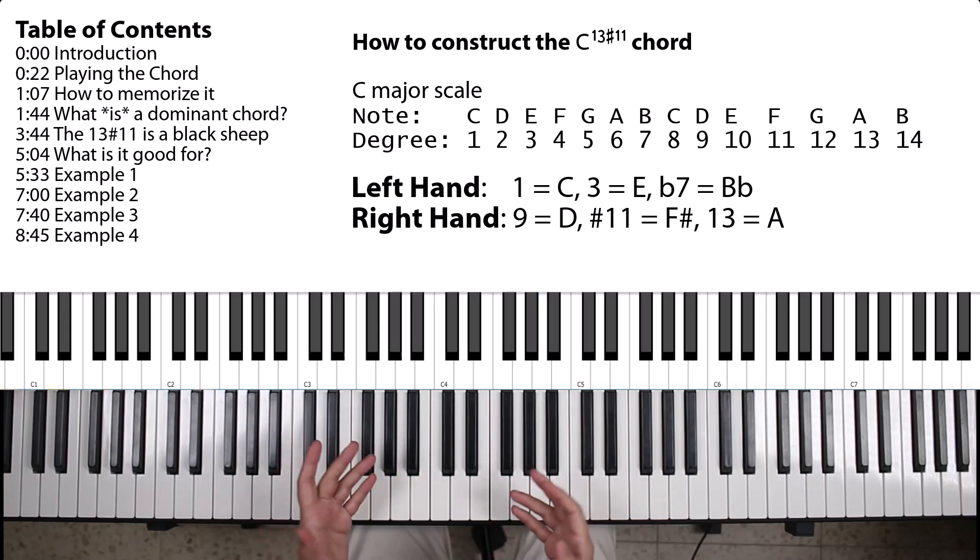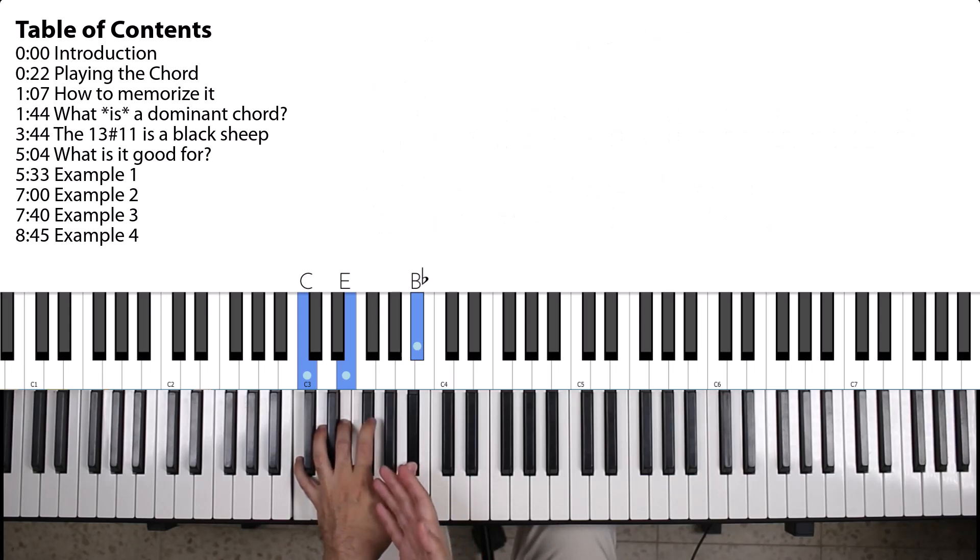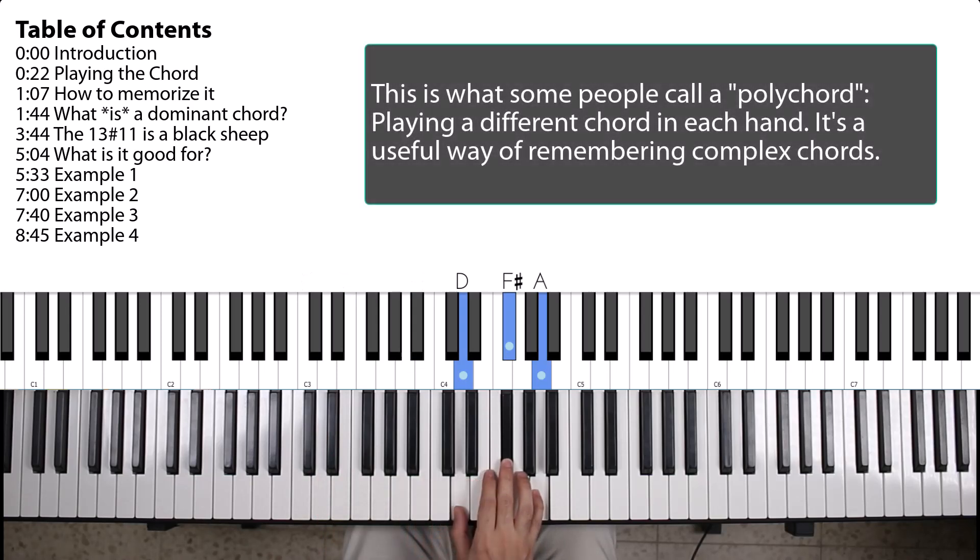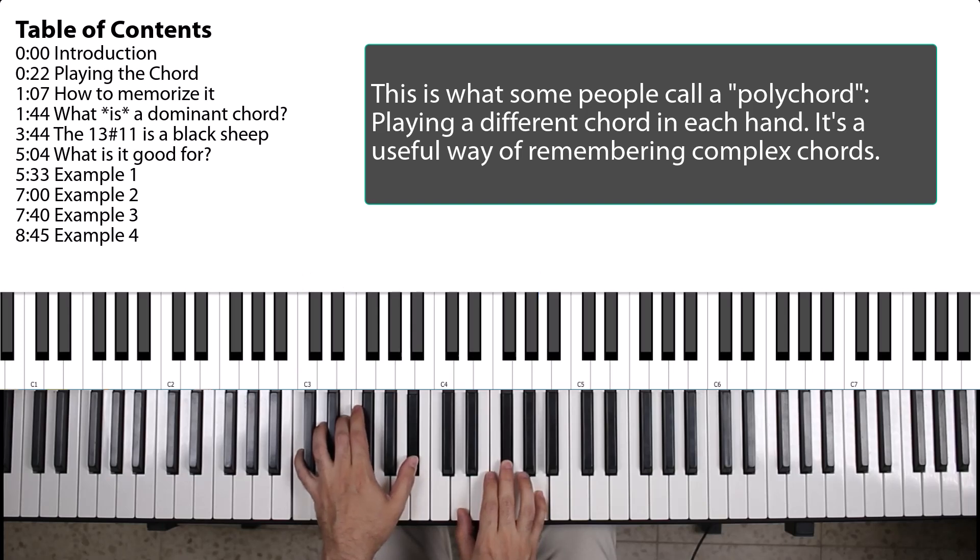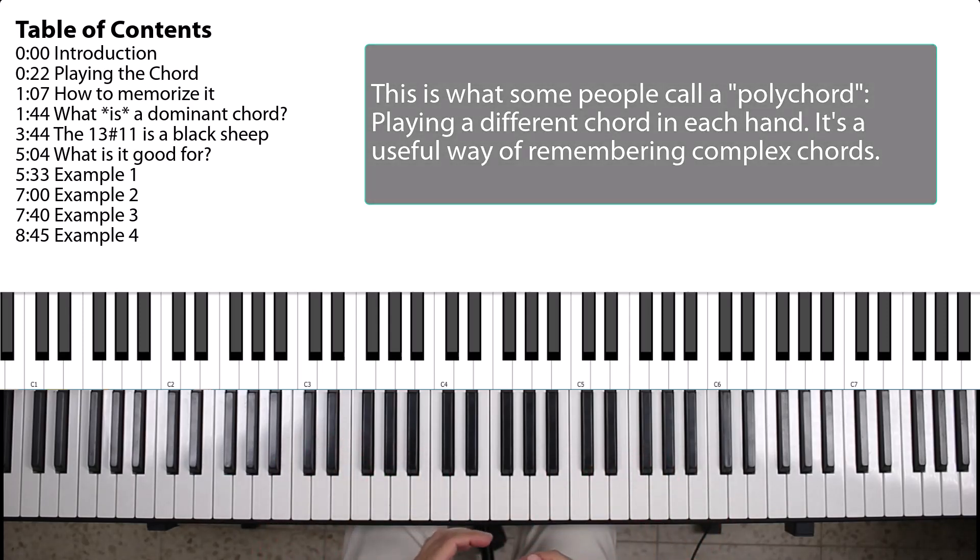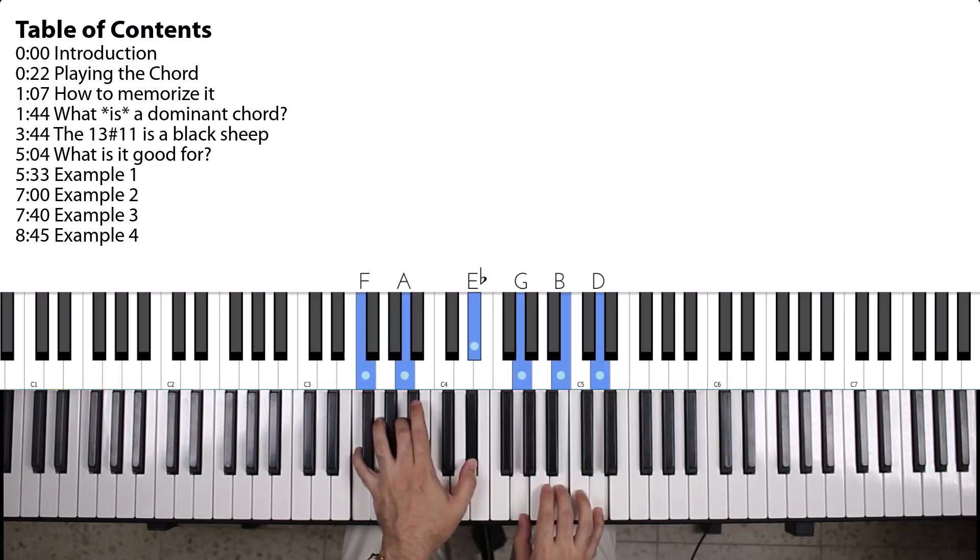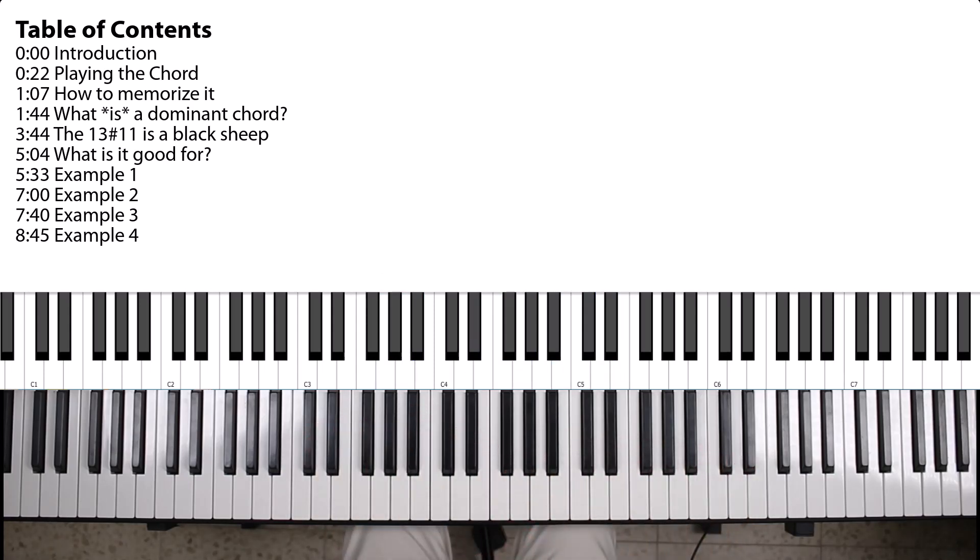And one easy way of remembering this is playing a C dominant 7 in the left hand without the 5th degree, and a D major in the right hand. Now of course you can play a dominant 13 sharp 11 chord, basically starting from any note. For example, here's a G13 sharp 11. Here's an F13 sharp 11. So all you have to do is just transpose it across the keyboard.